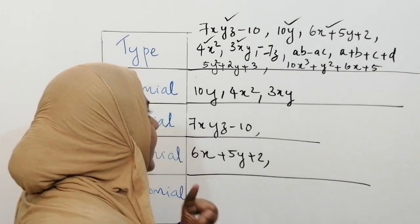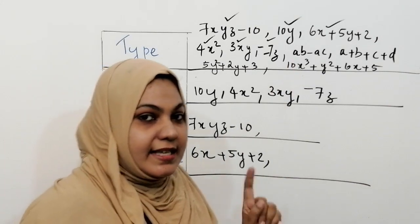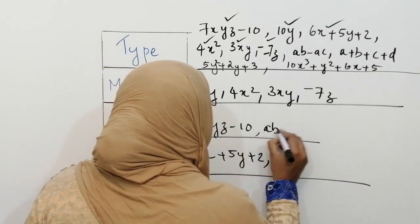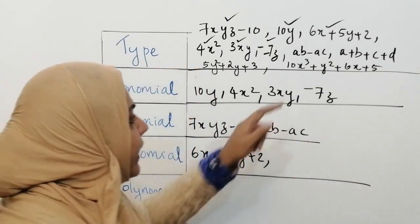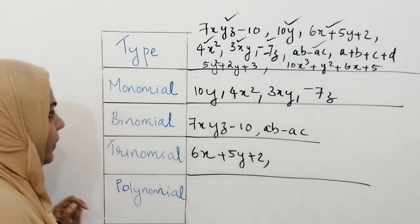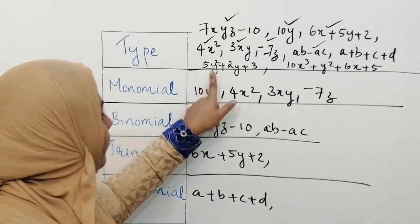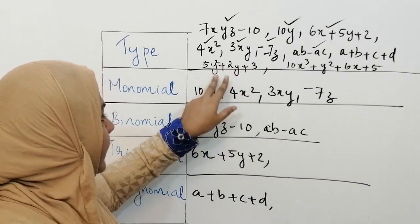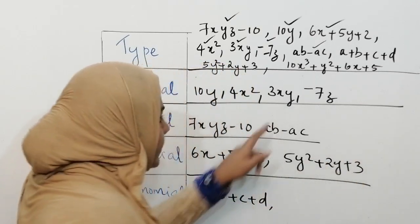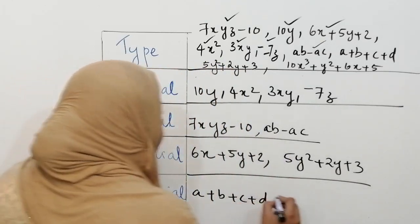Next, minus 7z has only one term, so that is monomial. Then ab minus az is an algebraic expression separated by a minus sign, so it comes under binomial. Next, a plus b plus c plus d has four terms, so it comes under polynomial. Then 5y squared plus 2y plus 3 contains three terms, so it is under trinomial. Finally, 10x cubed plus y squared plus 6x plus 5 has four terms, so it is under polynomial.